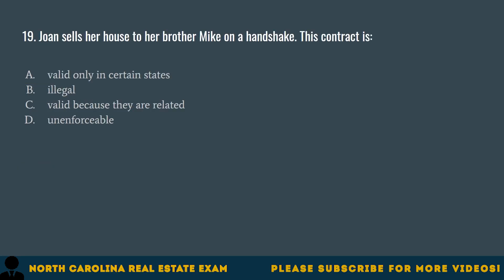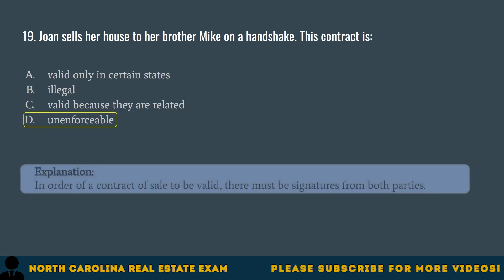Question 19. Joan sells her house to her brother Mike on a handshake. This contract is A. Valid only in certain states. B. Illegal. C. Valid because they are related. D. Unenforceable. The correct answer is D. Unenforceable. In order for a contract of sale to be valid, there must be signatures from both parties.